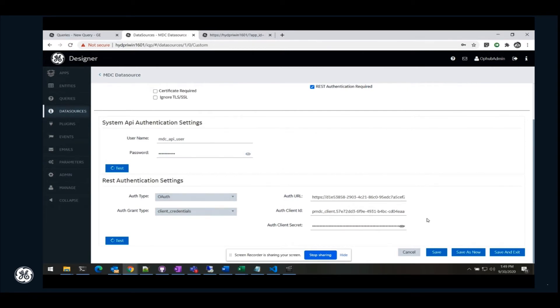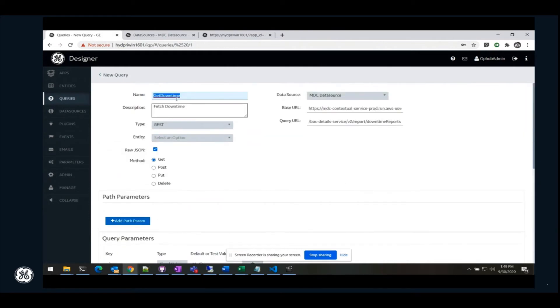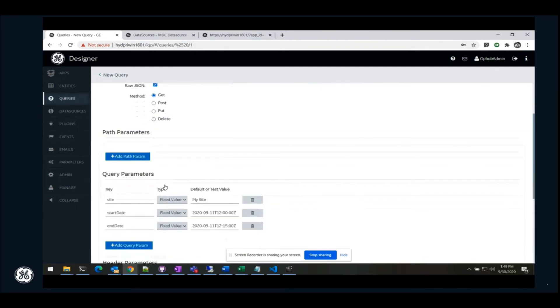Then go to queries, select downtime, select the data source that you created. Enter the base URL, query URL, query parameters and header parameters. You can test this and then save.